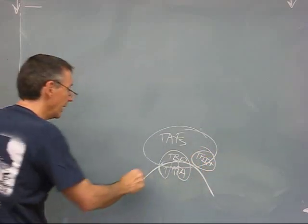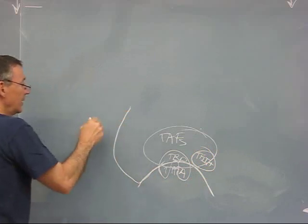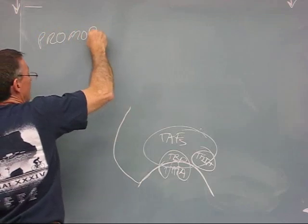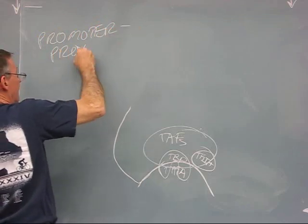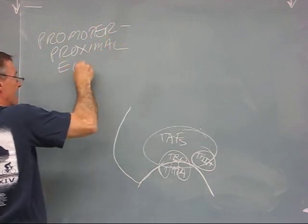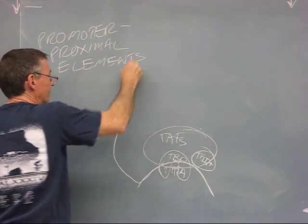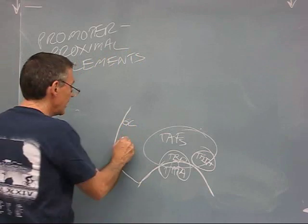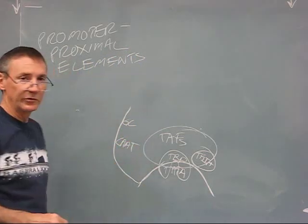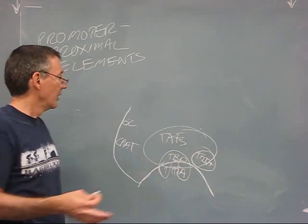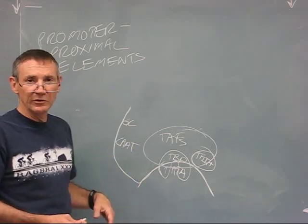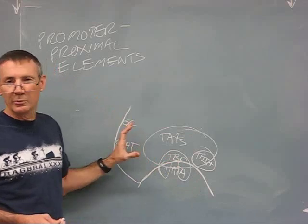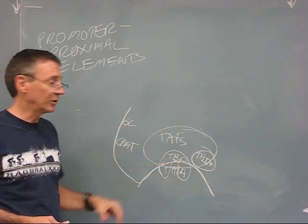Now, what else can bind nearby? Immediately nearby, you have what we call promoter proximal elements. These are DNA sequences that would include things like the GC box, the CAT box, consensus sequence CAAT, a variety of other components. What they have in common is, as the name suggests, they act only when they are close to the promoter, close to the TATA box. All of these would be within a range of a couple hundred bases upstream of the TATA box.